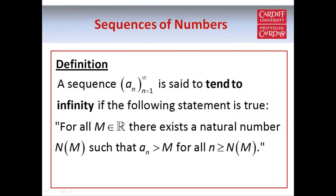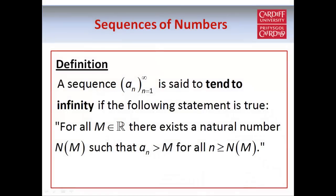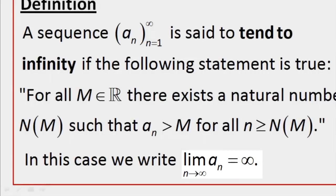We say that a sequence tends to infinity if, for any value of m no matter how large, there exists a natural number N(m) such that a_n is greater than m whenever n is greater than or equal to N(m). We write N(m) with m in brackets because N depends on m — N is a function of m. For example, if N(m) was 10, all terms from the 10th term onwards would be greater than m; if N(m) was 100, all terms from the 100th term onwards would be greater than m. In this case we say the limit of a_n as n tends to infinity is infinity, meaning the sequence diverges.